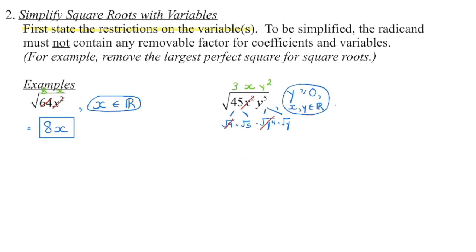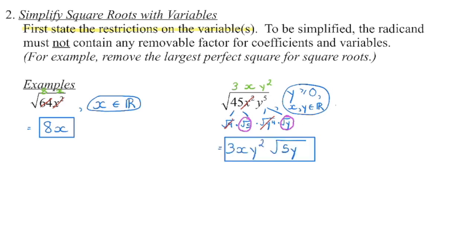Then we look at what's left. We still have the square root of 5 in the radicand, and we still have the square root of y in the radicand. So multiplying everything outside gives us a coefficient of 3xy squared, and within that radicand we still have that 5 and that y. This is the simplified value — there is no more perfect square within that radicand.